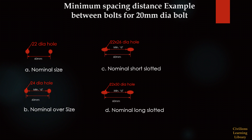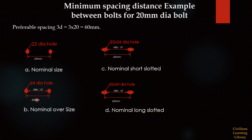Next, a minimum spacing distance example between bolts for a 20mm diameter bolt. The preferable spacing is 3d, so for a 20mm bolt it is 3 times 20 equals 60mm. For a standard hole, the bolt center-to-center distance is 60mm and the hole diameter is 22mm. For an oversized hole, the hole diameter is 24mm and center-to-center spacing remains 60mm. For a nominal short slotted hole, the hole size is 22 by 26mm — 22 being the W value and 26 the L value. For a long slotted hole, the size is 22 by 50mm — 22 is W and 50 is L. Always note that the clear distance between holes should be equal to or greater than the bolt diameter.